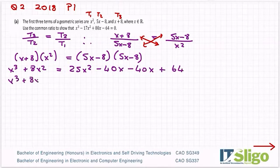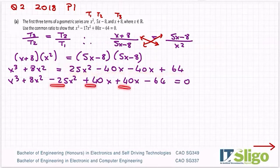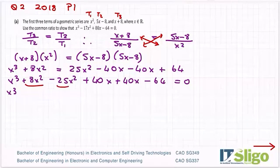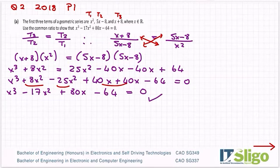Let's bring everything over to the left: minus 25x squared plus 40x minus 64 is equal to zero. Anything that moved over to the other side of the equation, I had to change the sign. Let's tidy up. There's my x cubed. So minus 25 plus 8 is minus 17x squared. And there's my 80x minus 64 is equal to zero. And so that's it shown.